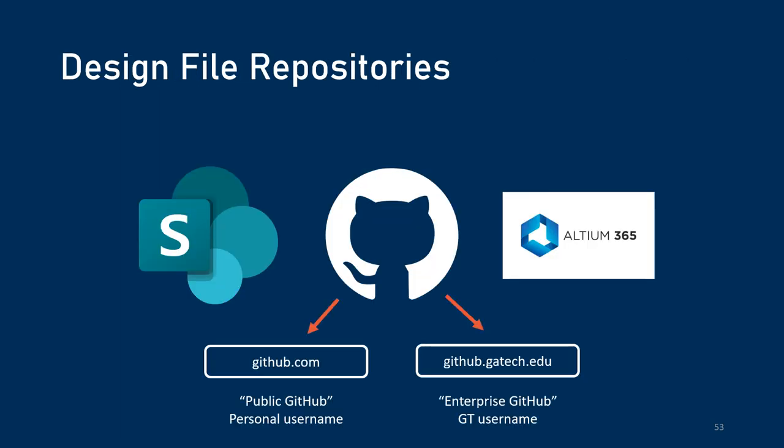The team also has design file repositories. The main difference here is that design file repositories are focused on specifically project files, not so much documentation, though documentation may play into it. We have SharePoint, which can be used for sharing CAD files, though it's not ideal for project management because its versioning tools aren't quite as sophisticated as some other options.